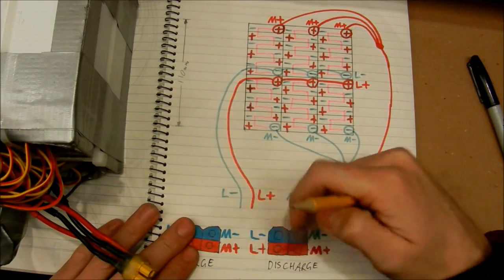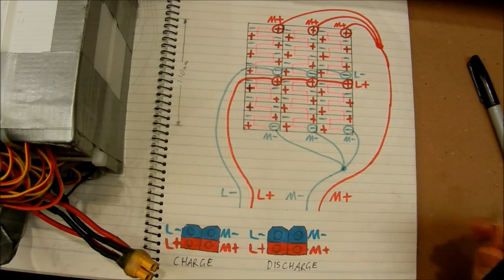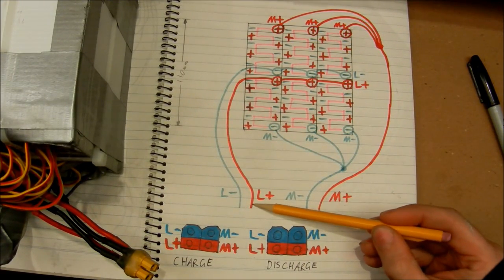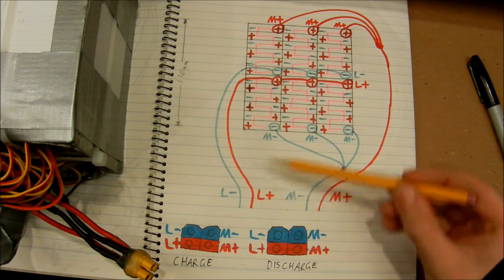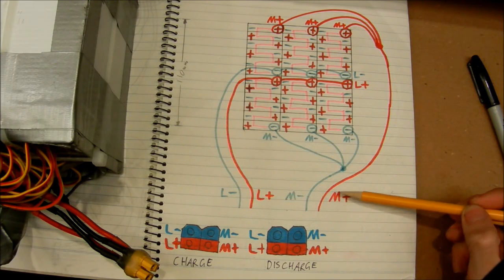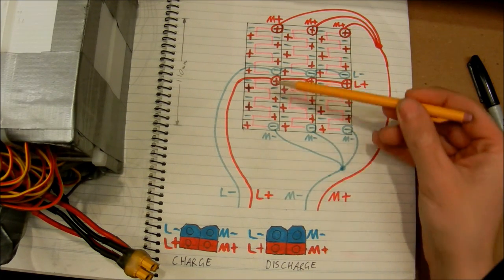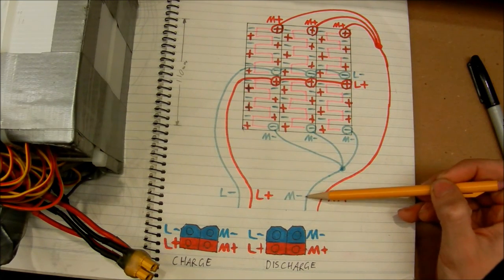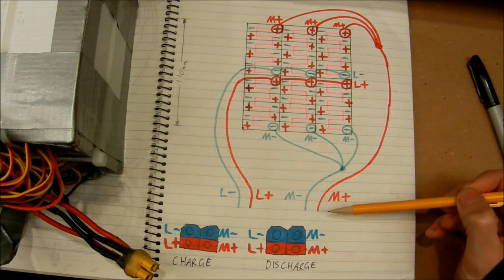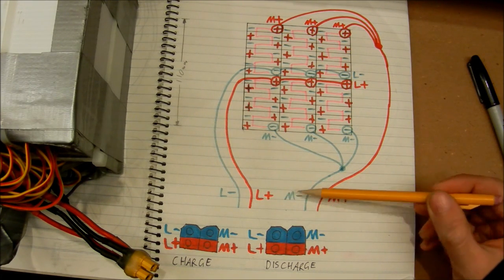Now, when I'm actually charging it, I need to connect the positives of the link cell here to the positive, to the normal positive to the motor, and the negative of the link cell to the negative of the motor. And so that will make it 24 volts and 30 amp hours.